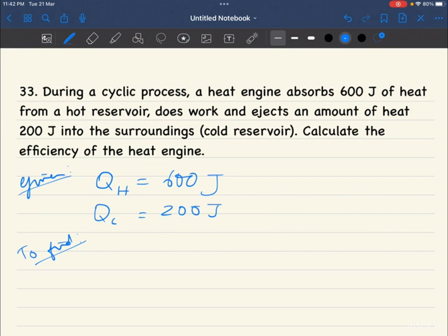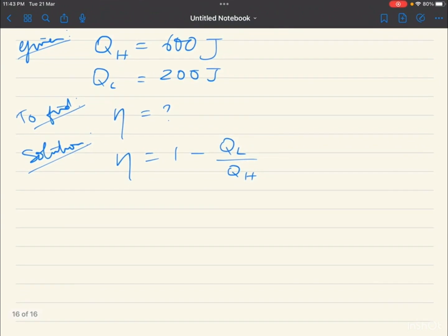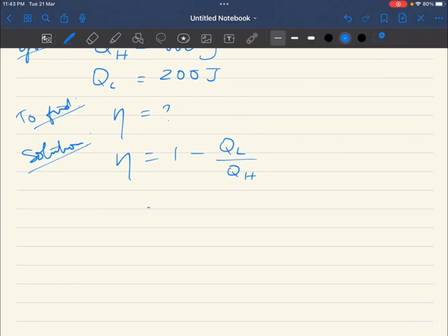What should we do? Efficiency. Number one can be equal to percentage or decimal place. Solution: it is very easy in the question. Efficiency equal to 1 minus QL by QH. QL is 200, so 1 minus 200 by QH 600. Cancel: 2 table 1 time, 2 table 3 times. 1 minus 1 by 3.